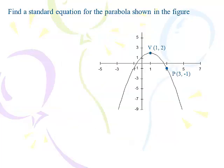Here's our first question: find the standard equation of the parabola shown in the figure. We have a vertex, it's opening down, and they've given us a point (3, -1). The first thing I do is write the base equation x squared equals 4py, because this is a vertical parabola. It's opening down, so I know 4p is going to be negative. I know there's an h and k that's not the origin, but I always write this first to get me thinking in the right direction.